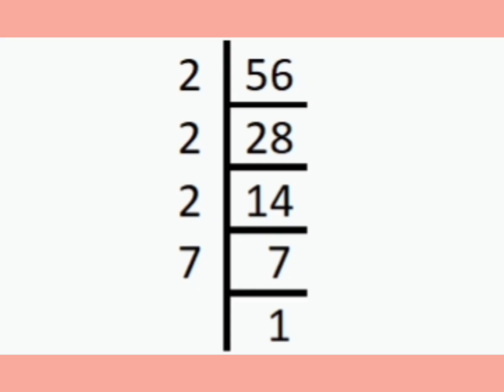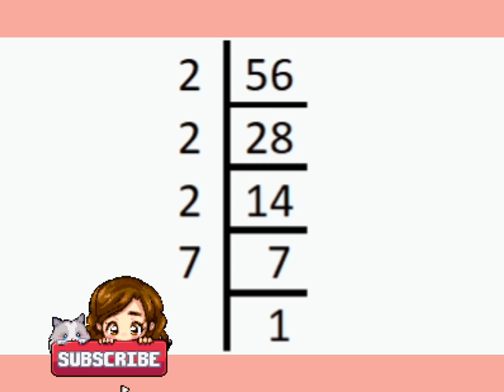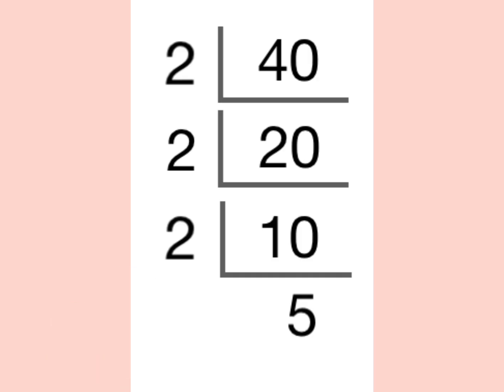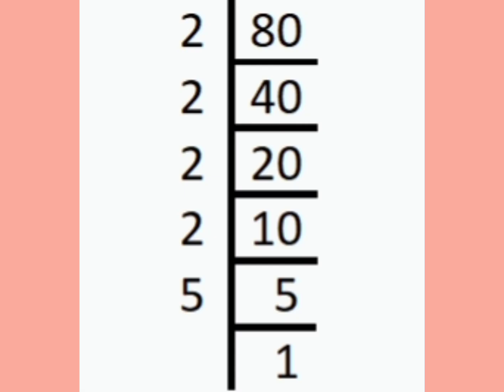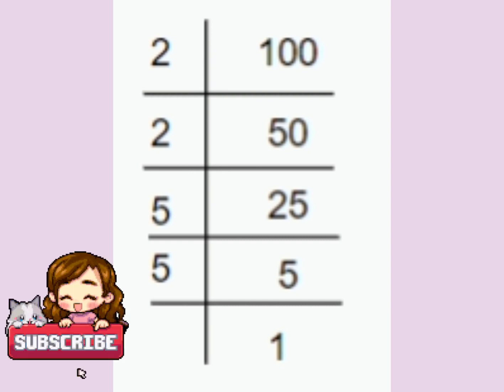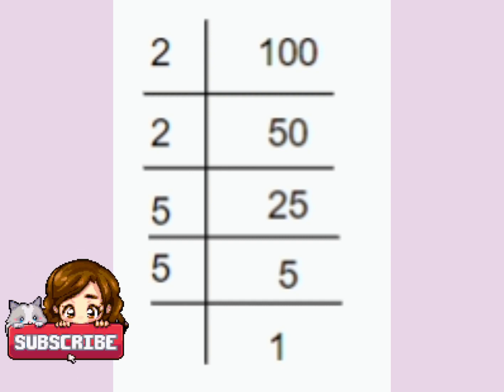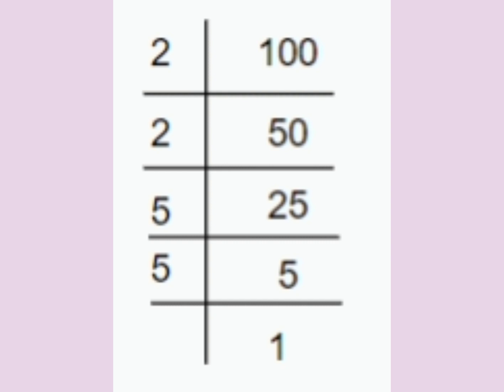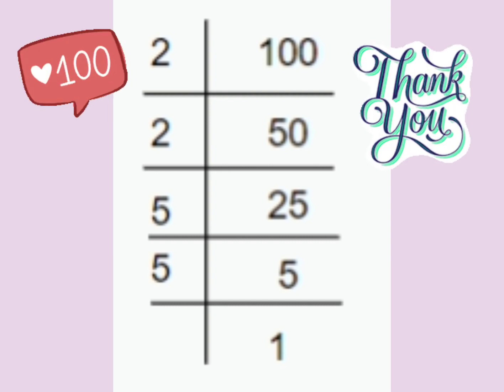Here, I have given some more examples of prime factorization — just have a look at them: 56, 40, 80, and 100. In the description box, I have given the link to find the prime and composite numbers from 1 to 100 and to do the factor tree. Just have a look at it. Thank you for watching.